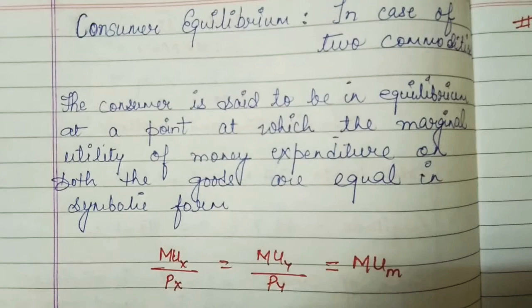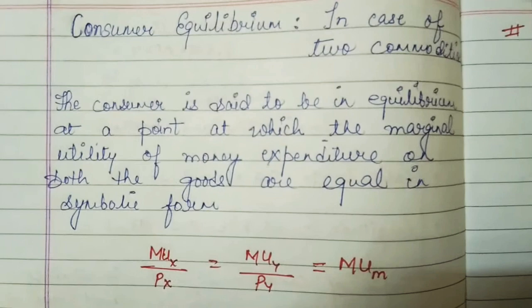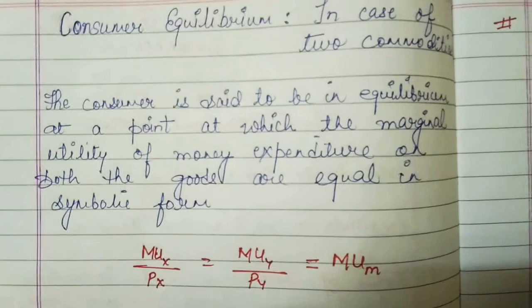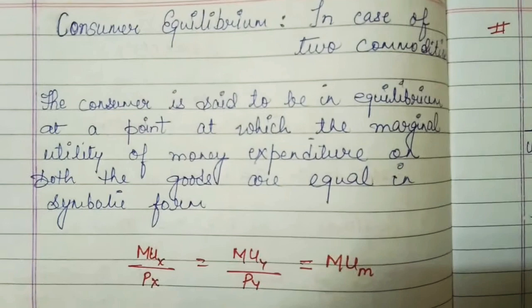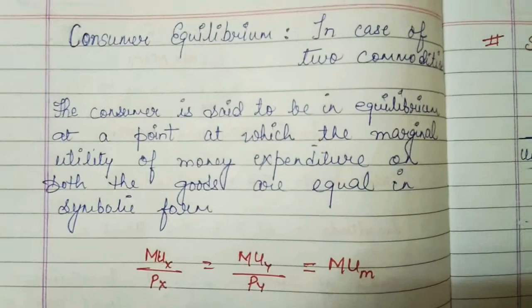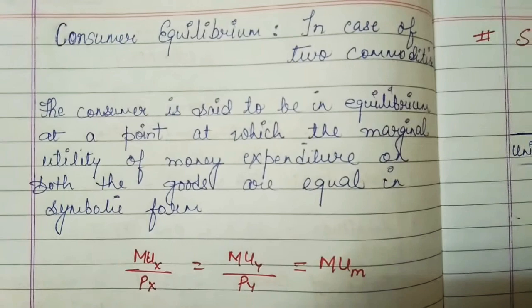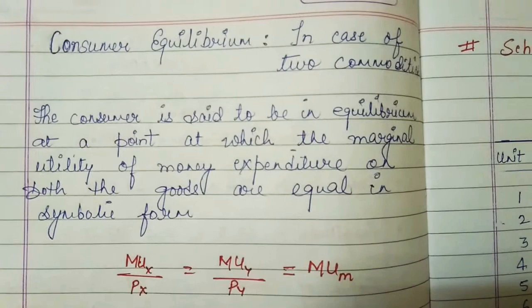In the case of a single commodity, we studied MUx / Px = MUm, where there is only one good — good X. But here we have two commodities, good X and good Y, so MUx / Px = MUy / Py = MUm. The consumer attains equilibrium in case of two commodities when MUx / Px equals MUy / Py, and both equal MUm.